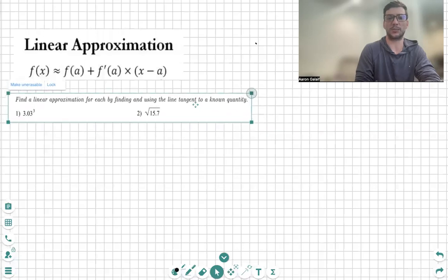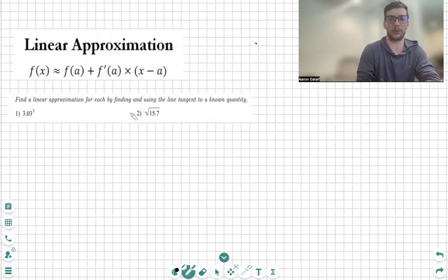First thing we recognize when we're looking at number two, because we've done number one already, is my f(x) function without a value is square root of x. It can clearly be said because 15.7 is being plugged into x. Next, you want to find out, so now you know that x is 15.7. That is our x value being tested or approximated.